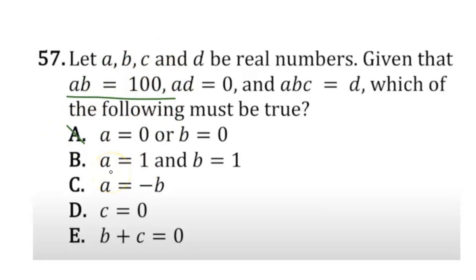B says both a and b are 1. Well, a times b is given as 100. 1 times 1 is 1. Those two aren't equal, so it can't be B. C says a is equivalent to negative b. Well, again, we can see we get a positive value when we multiply a and b. If C were true, we'd get a negative value instead of positive 100 in our case.